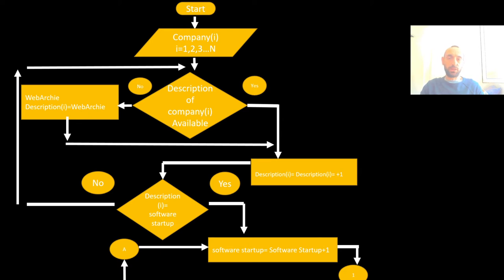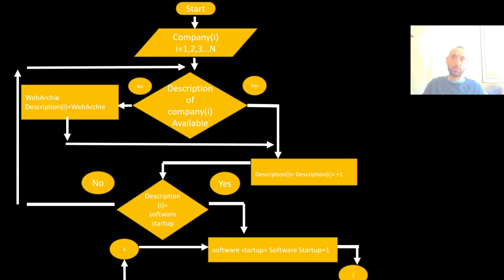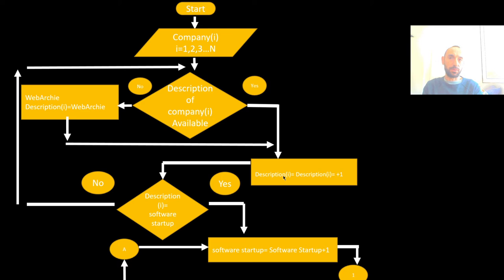To collect each company's description, he goes to the company's website. If the description is available there, he takes it directly from the website. If it's not available, he goes to the web archive and collects the description from there. After this data collection step, we have descriptions: description 1, description 2, and so on.